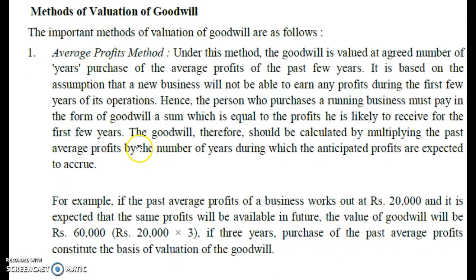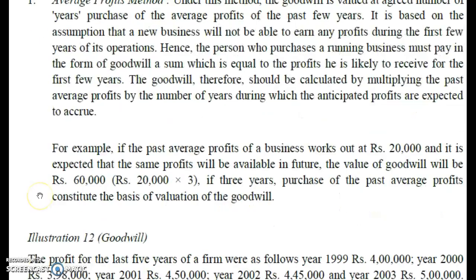The formula is: goodwill is calculated by multiplying the past average profit by the number of years of purchase. The number of years of purchase is given in the question. So: Goodwill = Average Profit × Number of Years of Purchase.